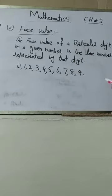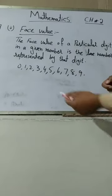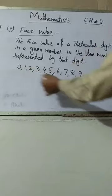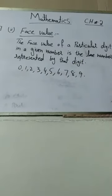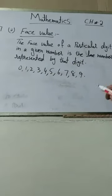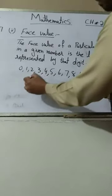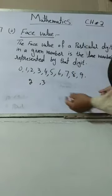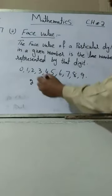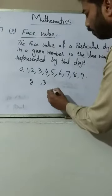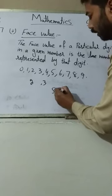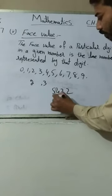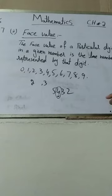Now, the face value of a digit is the number represented by that digit itself. Every digit from 0 to 9 has a face value. For example, the face value of 1 is 1, face value of 2 is 2, face value of 3 is 3, face value of 4 is 4. The face value does not change regardless of where the digit is placed in a number.